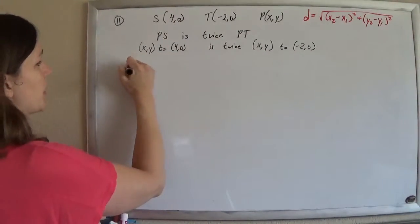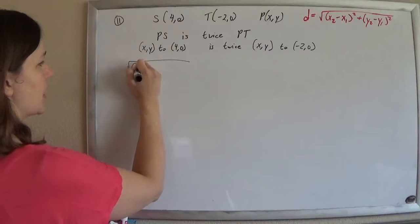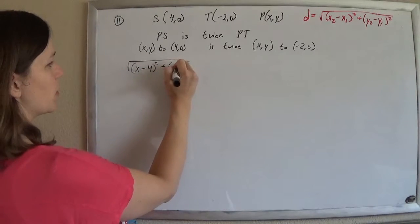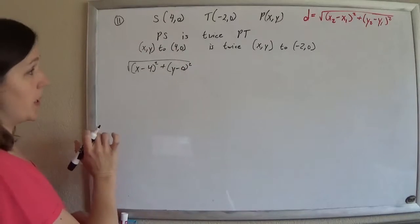So I'm just going to plop it in here. The length of PS is going to be x subtract those x's, square it, add, subtract those y's, square it. So that's the distance from (x,y) to P at the origin.